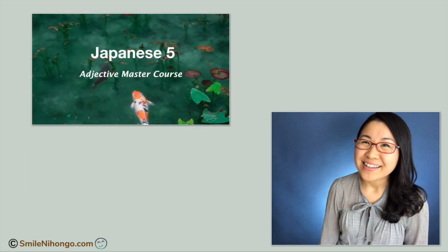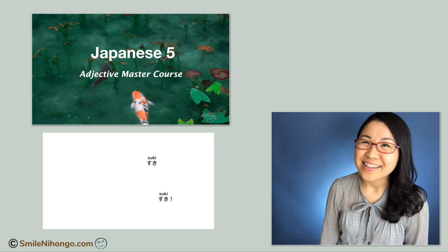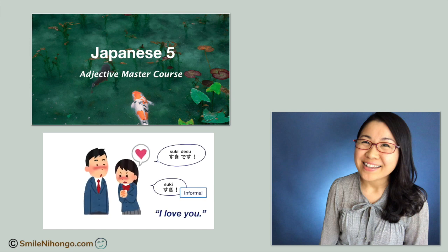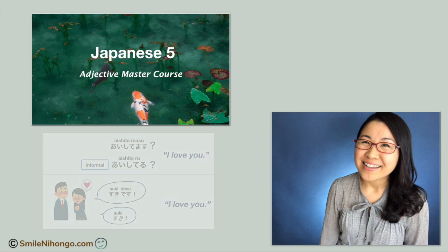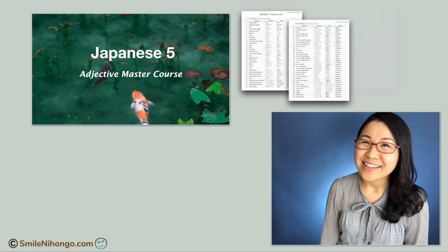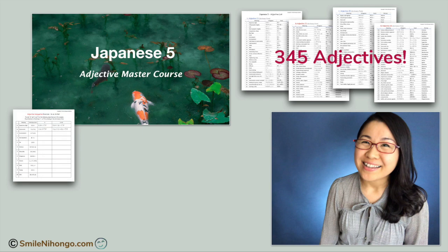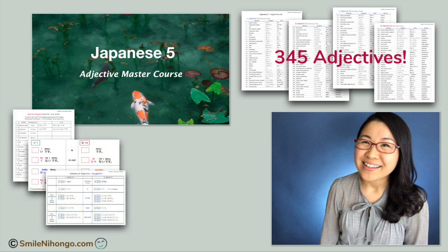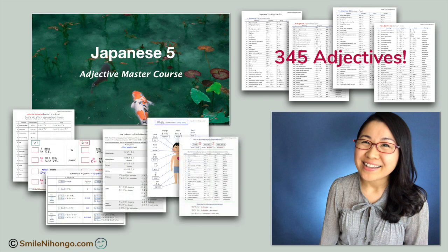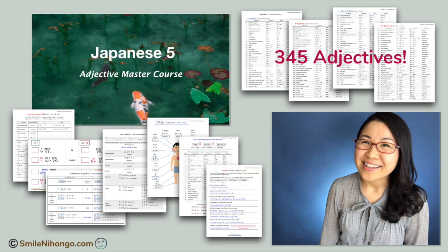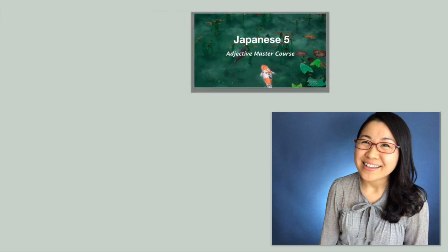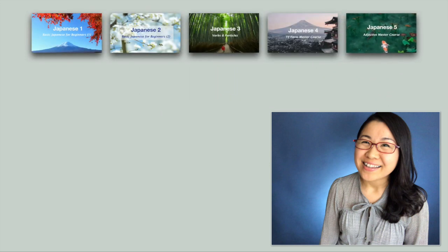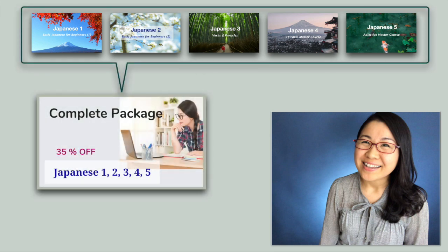This is a sample lesson from my online course, Japanese 5 Adjective Master Course. The course comes with comprehensive lesson videos that you can watch over and over again. It also provides lots of PDF materials such as a list of 345 adjectives and much more. I will always be there to answer your questions and support your learning. I also have four more courses available on my online Japanese school. The best price to get all the courses is to sign up for the complete package — find all the information in the description box below.